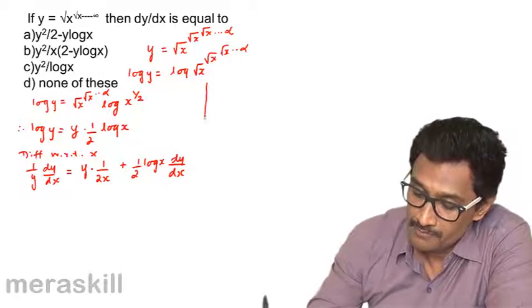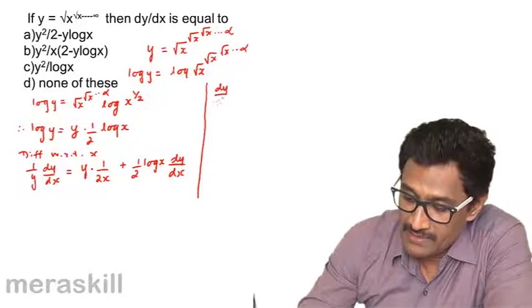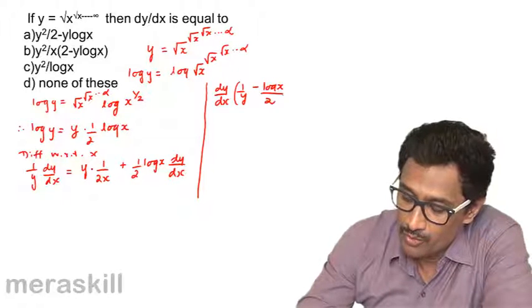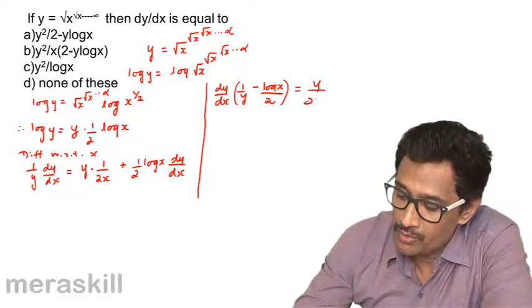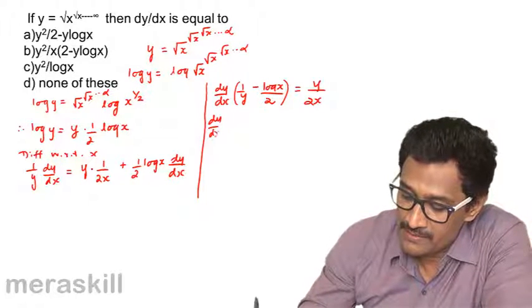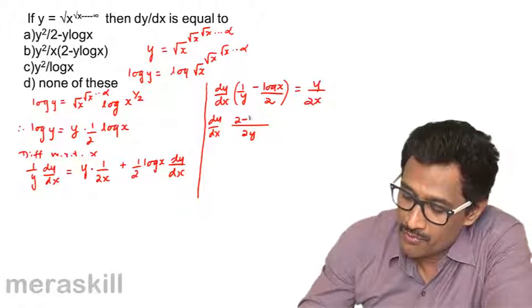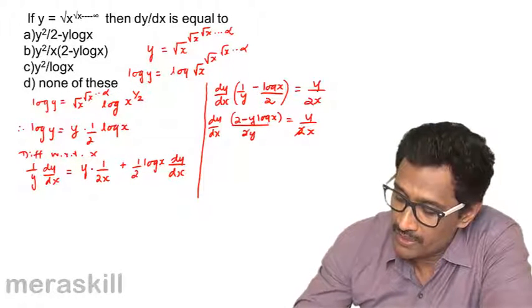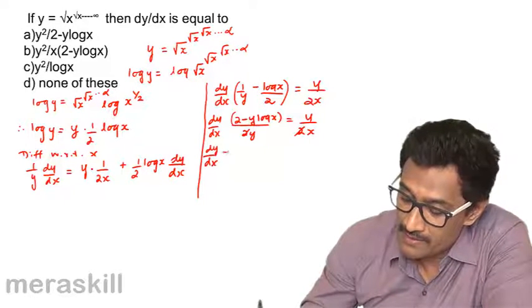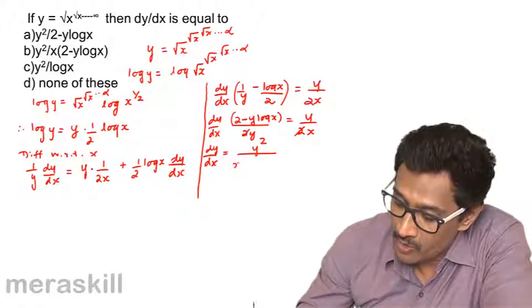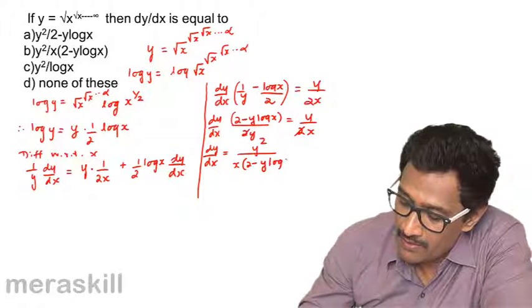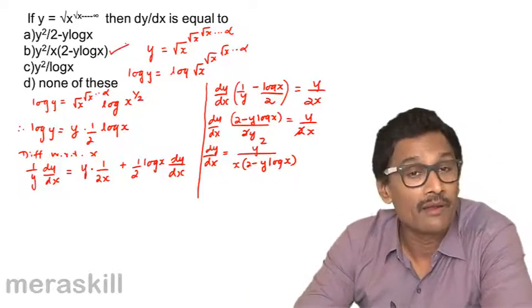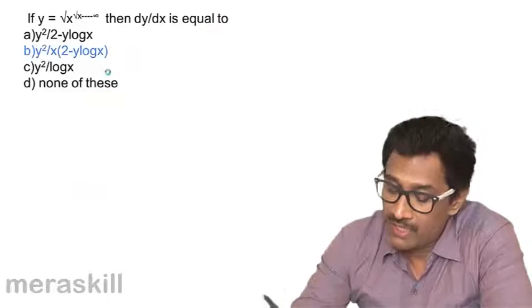Differentiating: (1/y)·(dy/dx) = y · (1/(2x)) + (1/2)·log(x) · (dy/dx). Collecting dy/dx terms: dy/dx · [1/y - (log x)/2] = y/(2x). This gives dy/dx · (2 - y·log x)/(2y) = y/(2x). Cross-multiplying yields dy/dx = y²/[x·(2 - y·log x)], which is option P.